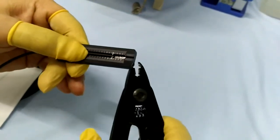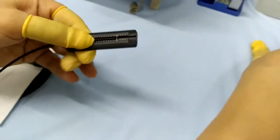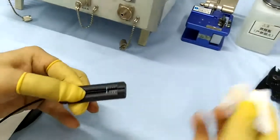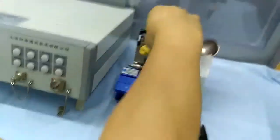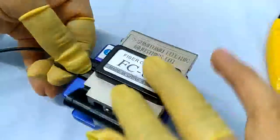Use fiber stripper to strip off the fiber coating. Clean the fiber with the alcohol. Put it into the fiber cleaver to cut off the fiber.